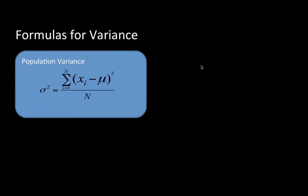Let us look at variance now. The variance is the average of the squared deviations from the mean. Here we are doing the population, so sigma i equals 1 to N of (xi minus mu) squared. Mu, recall, is the population mean — it's the parameter. For every value i from 1 to capital N, we take the deviation from the mean xi minus mu, then square it and add up all those squares and take the average.